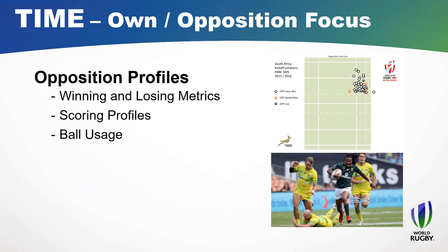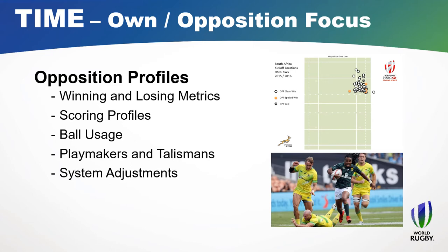Are they a team that likes to build penalties or is it tries all the way? How do they use the ball — especially their halves or tens — their kick-pass-run breakdown. Who are their key playmakers and talismans, and is there anything we can do to shut them down? How well do we know ourselves — are we so confident in our system that we can make small adjustments to target the opposition? And a great time-saving tip: just watch the first 20 minutes of matches, because there's generally no score implication, so teams will play how they want to.